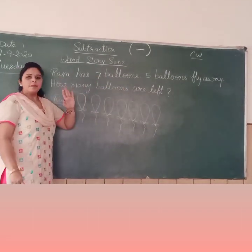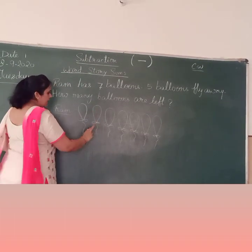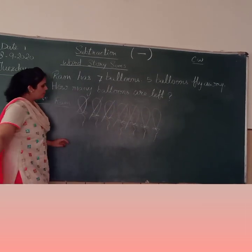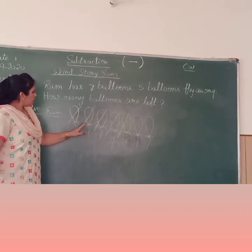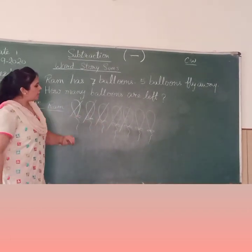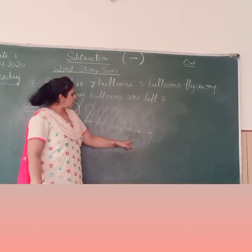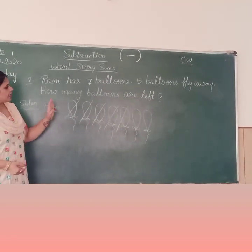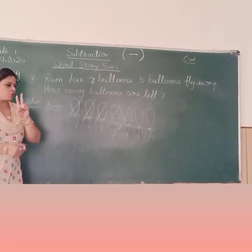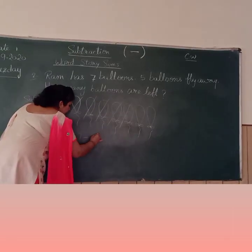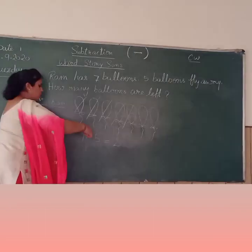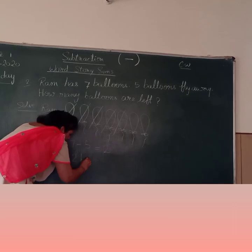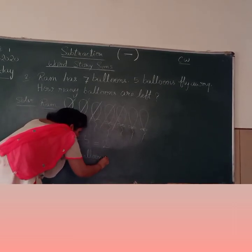5 balloons fly away, means 5 balloons fly away. Then 1, 2, 3, 4, 5 — we will cut 5 balloons. How many balloons are left? Let's count: 1, 2. Only 2 balloons are left. Then our answer is 7 minus 5 is equal to 2. Our answer is 2 balloons are left.